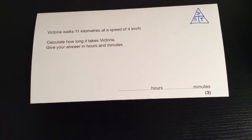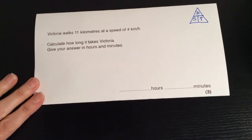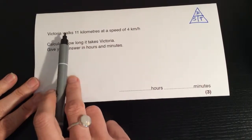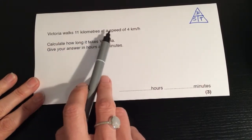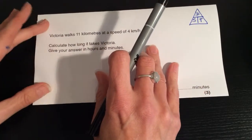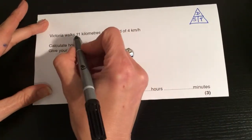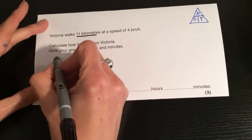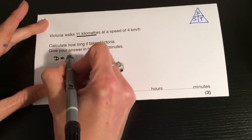We're going to have a look at another distance time calculation. This time we have that Victoria walks 11 kilometres at a speed of 4 kilometres per hour. Let's have a look at what we have to start with. We have 11 kilometres, which is the distance.